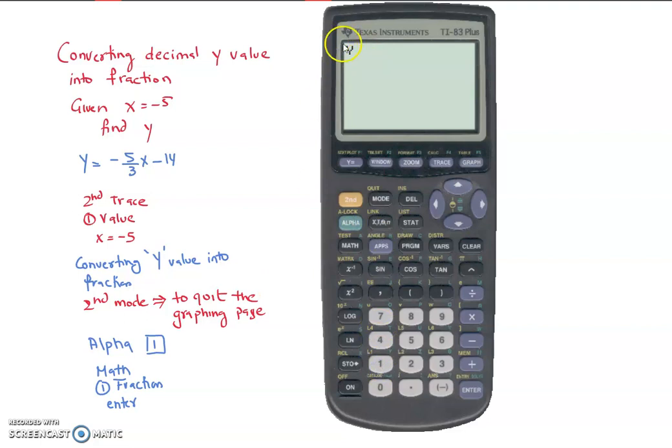So this will bring the y up, and then we're going to go under math. We're going to pick option number 1, which is to convert it into fraction. So you'll see it says y into fraction, and then you're going to hit enter. So it converted that decimal number into a fraction for us.